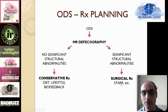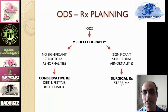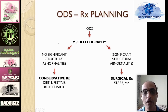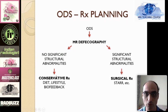The surgical approaches typically include the STARR surgery — Stapled Trans-Anal Resection of Rectum — and the laparoscopic ventral rectopexy, where the surgeon goes in laparoscopically and pulls up the rectum and fixes it. The other group of patients who do not show significant abnormalities on MR defecogram are not offered surgery; they are offered conservative treatment like diet modification, lifestyle modification, and biofeedback therapy.